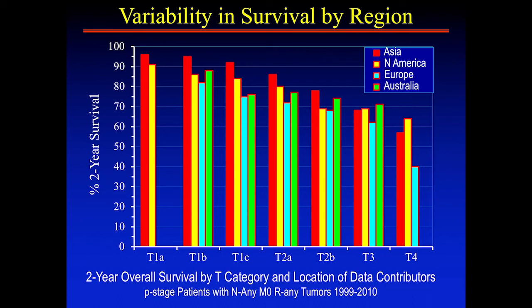There are differences though when you look within that database. Whether you're looking at the T category or anything else, it depends on what region the data came from and what type of database it was. There's a lot of variability that's buried underneath that, and I think we sometimes forget about that.